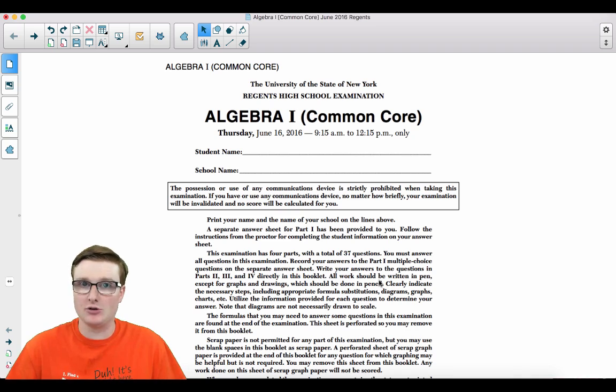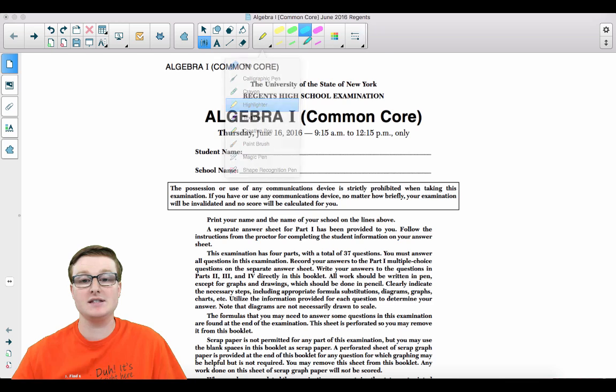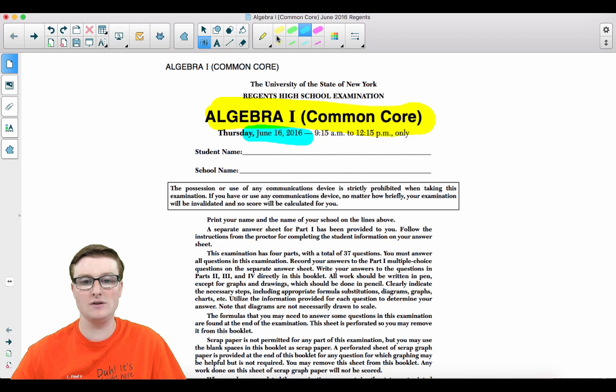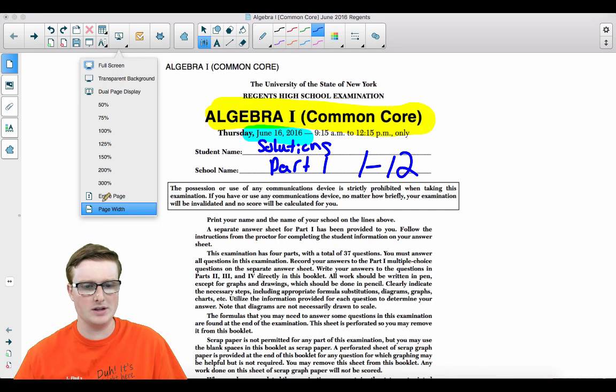Welcome Algebra 1 students to another Regents review video. This is the Algebra 1 Common Core Regents exam, the June 2016 administration. These are going to be the solutions to Part 1, Numbers 1 through 12. This is the first half of the multiple choice for this test.